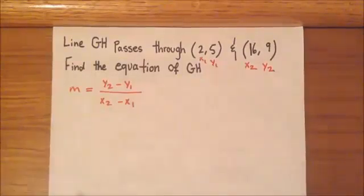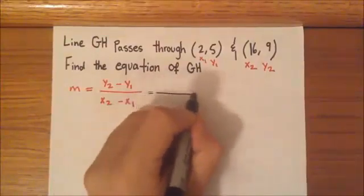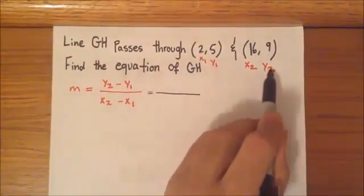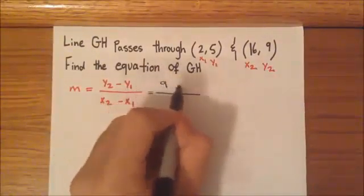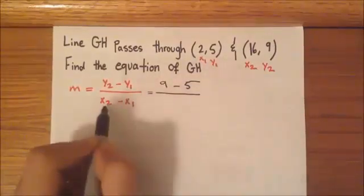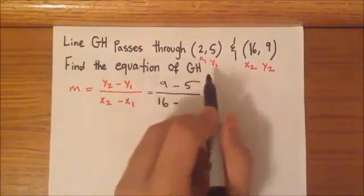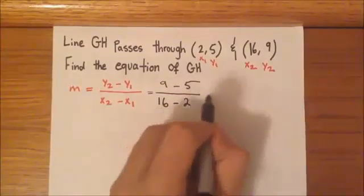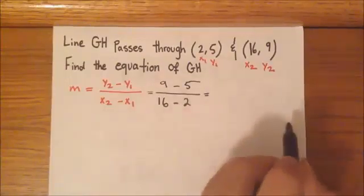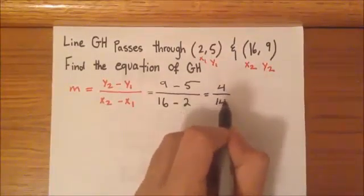And now all we have to do is just plug them into the formula. So our y2 is going to be 9 minus y1 which is going to be 5. Then we have x2 which is going to be 16 minus x1 which is going to be 2.